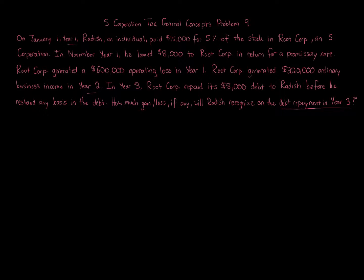Radish, an individual, pays $15,000 for 5% of the stock of an S corporation — note it's an S corporation, not a C corporation, not a partnership. With S corporations, you're not able to consider liabilities in the basis of the stock. You are able to consider personal loans to S corporations as a separate loan basis item.